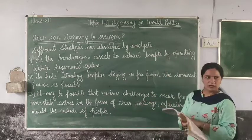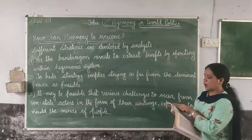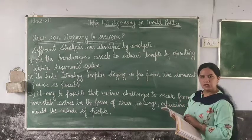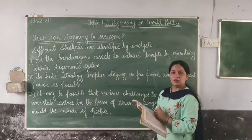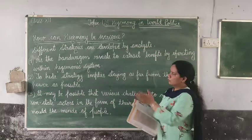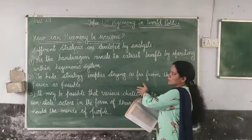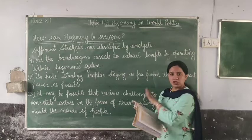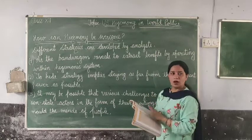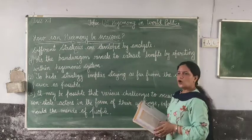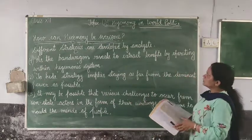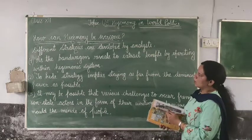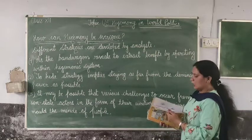In history, France and Britain's hegemony in the 19th century was also considered not proper by many. Hegemony has never been permanent. So this was our third lesson — US Hegemony in World Politics — and the last topic was how can hegemony be overcome.